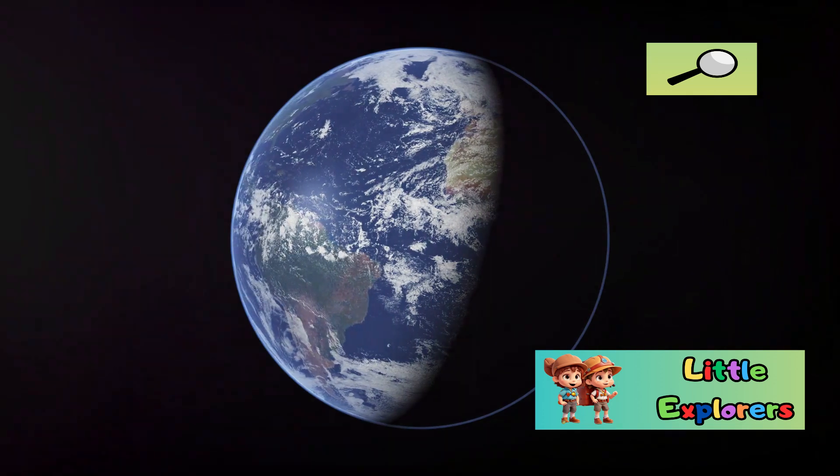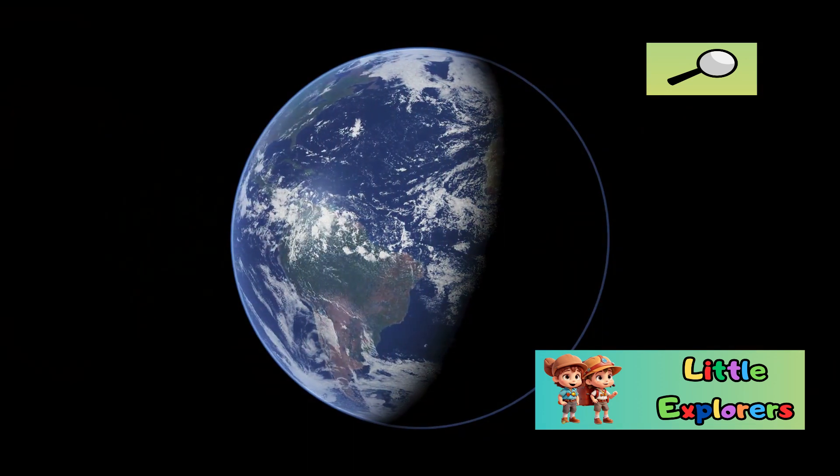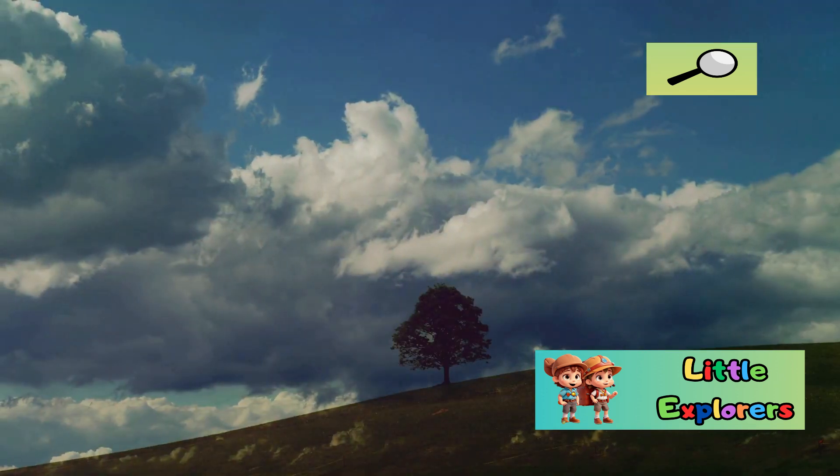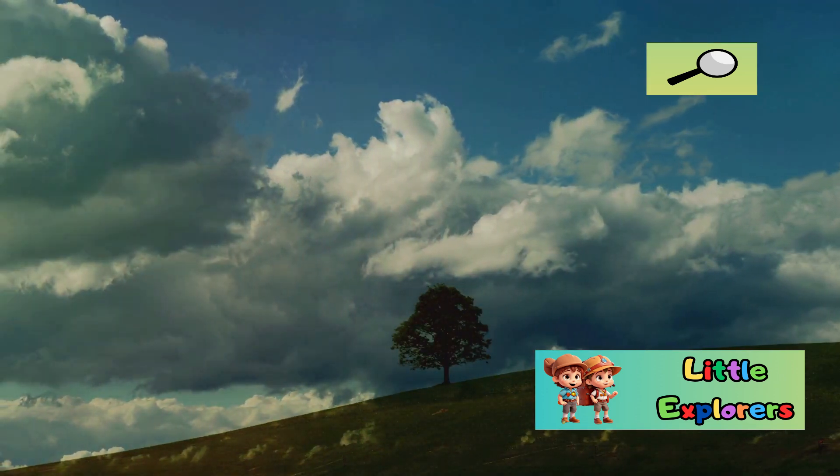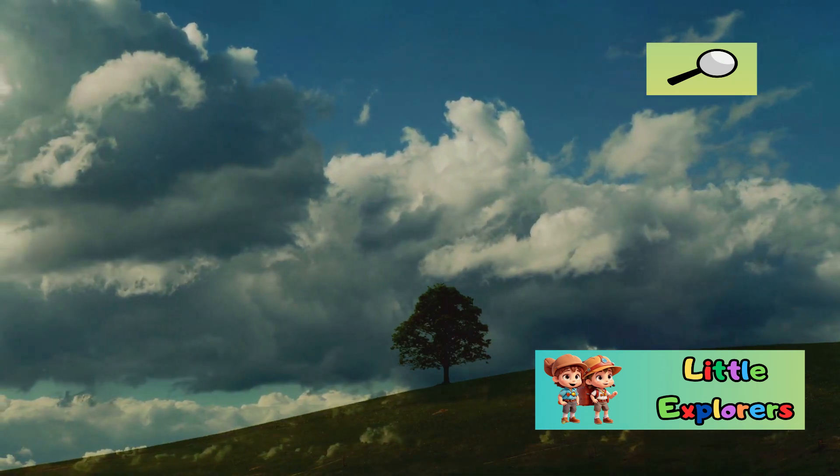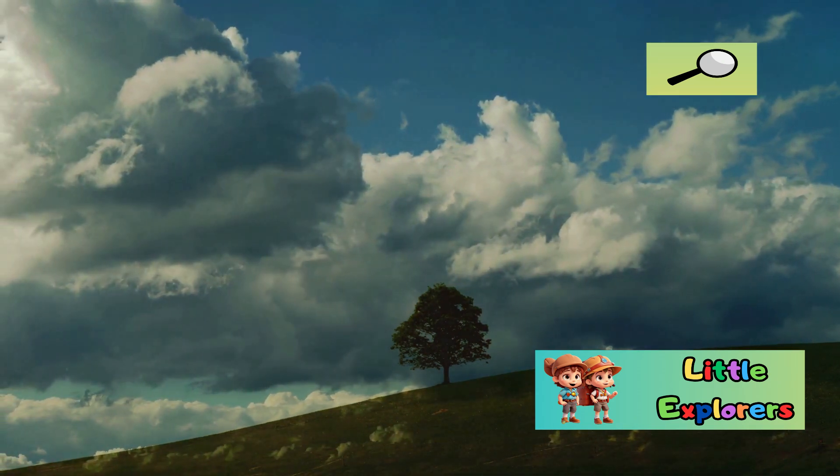Each ecosystem, from the smallest pond to the vast oceans, plays a part in this grand tapestry of life. Evolution has crafted a multitude of life forms, each uniquely adapted to their environment. Over time, natural landscapes have changed, and with them, the species that inhabit them. This constant change and adaptation is what makes life on Earth so fascinating.